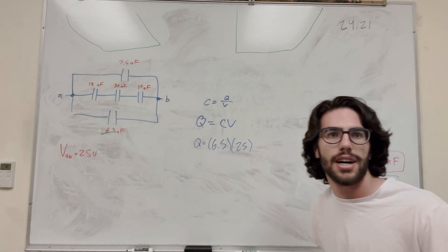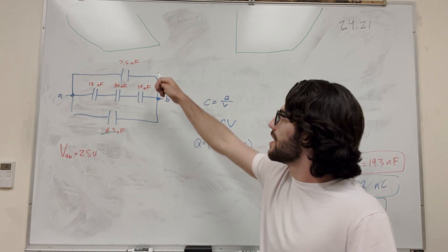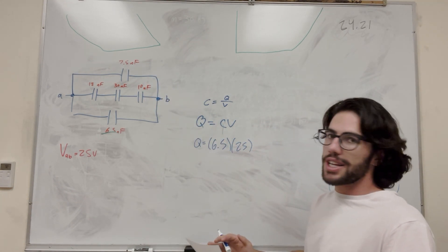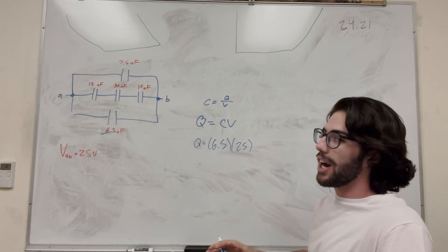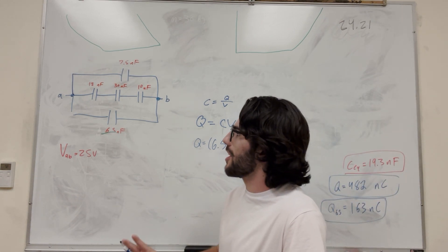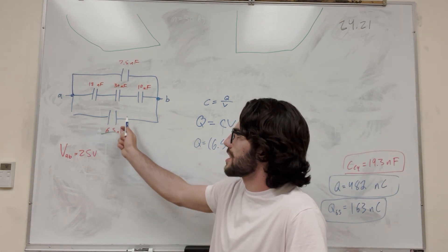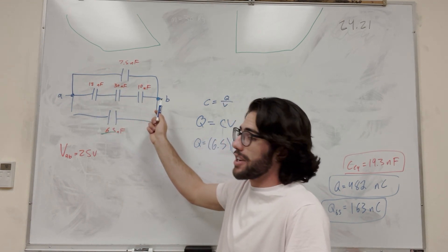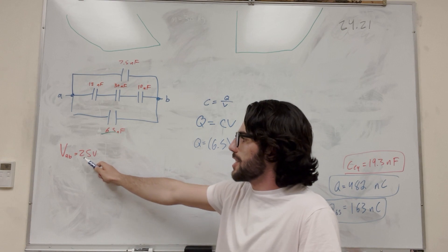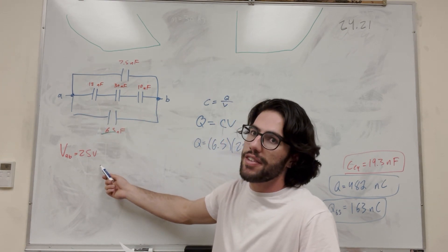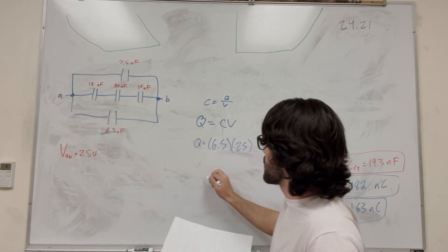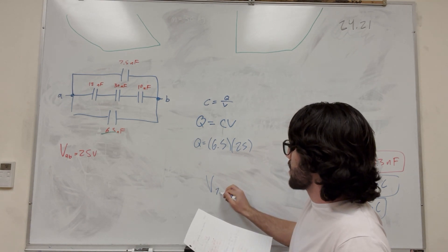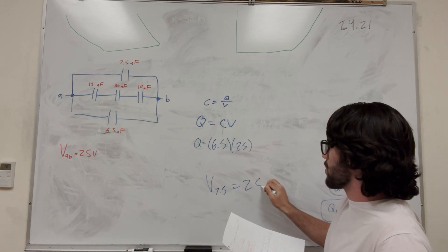And part D asks, what's the potential difference across this capacitor? So what I said, right? The potential difference in parallel is the same no matter which series you're on. So the potential difference across this capacitor is going to be the same as across this capacitor as across these three capacitors. And the potential difference from A to B is 25. So then we know that the potential difference across the 7.5 is just going to be equal to 25 volts.